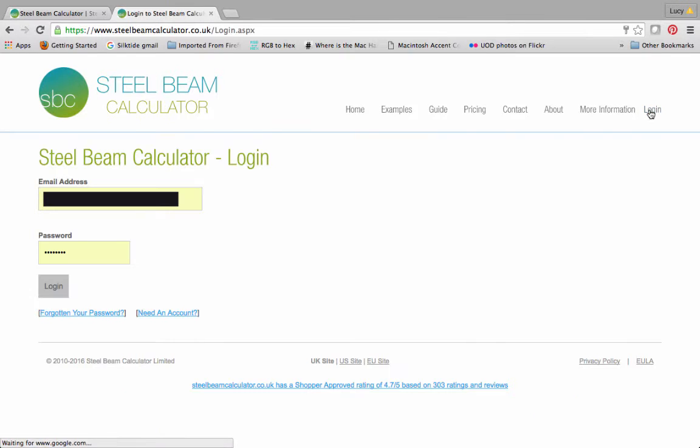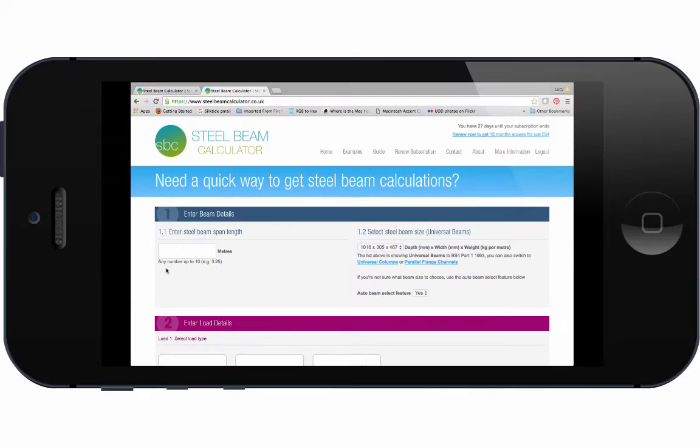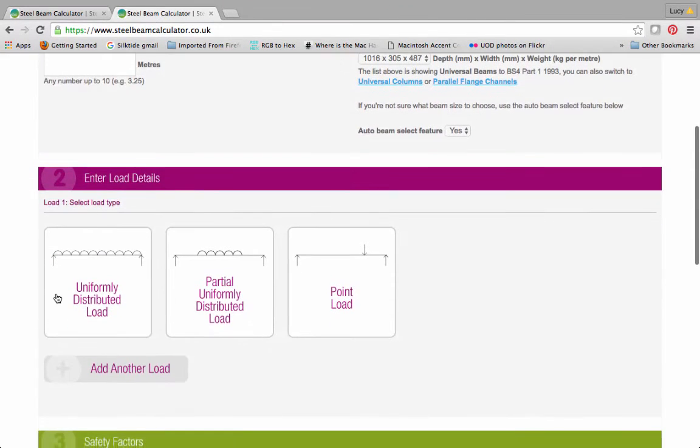The Steel Beam Calculator is mobile responsive, which means it will work well on all your devices: PC, Mac, tablet and smartphone. It's easy to use, but it does require some understanding of steel beams and structures.